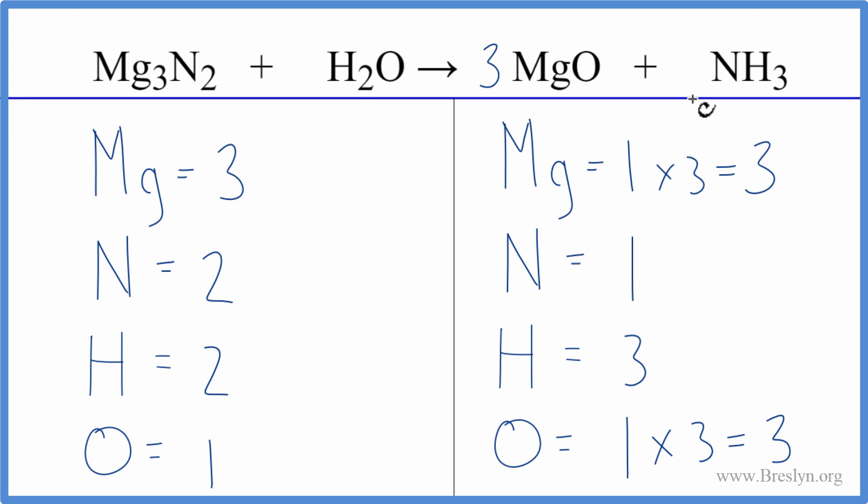Nitrogens, we have two here and one here. Put a coefficient of two in front of the ammonia. We have one times two. So that'll balance the nitrogen atoms. Three times two. That gives us six hydrogen atoms.